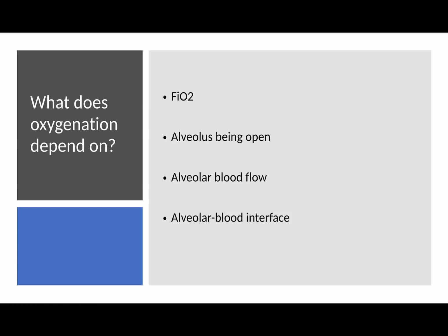Oxygenation depends upon four things: the fractional inspired concentration of oxygen, the alveolus being open — whether during inspiration or expiration — alveolar blood flow, and the alveolar blood interface. Alveolar blood flow is vital and often forgotten. The alveolar blood interface is usually the disruption causing hypoxia, through infection with pus and inflammation, pulmonary edema, or acute left-sided heart failure.